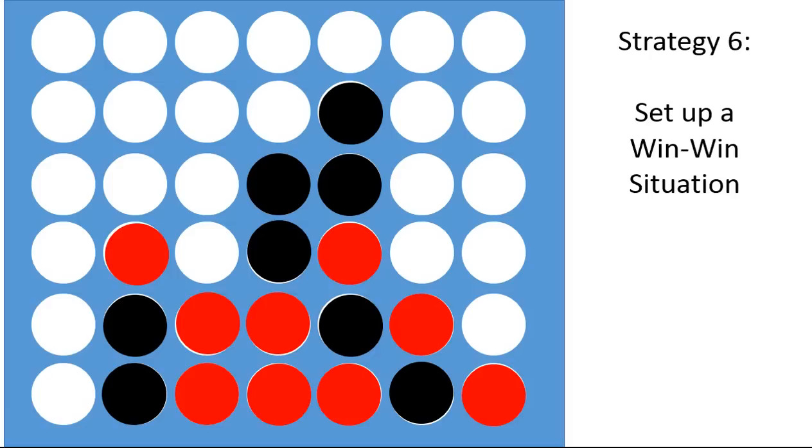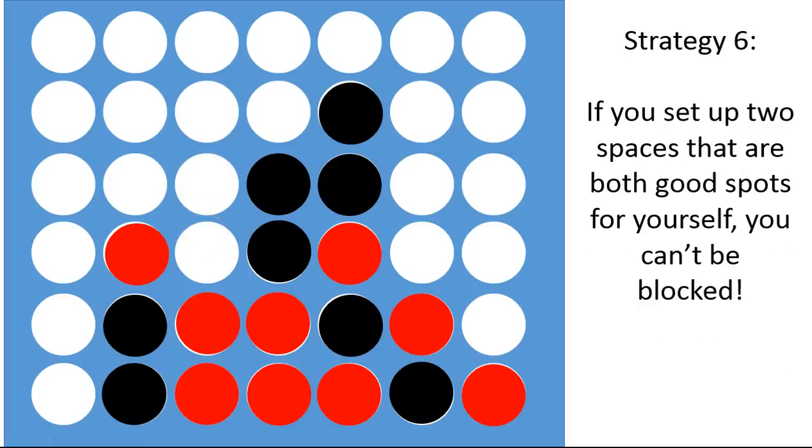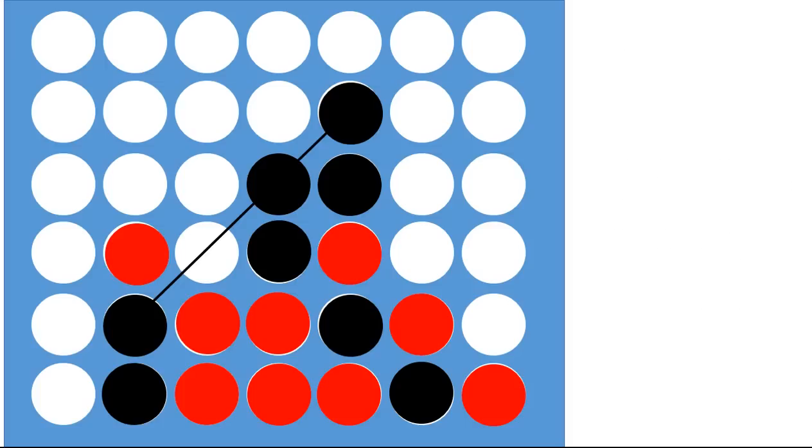And the reason why red is going to lose is because black can win here or here. You see that? Black has set up a situation that if red tries to block, he'll win. And if red doesn't block, he'll win. So if you set up two spaces that are both good spots for yourself, you can't be blocked. And that's what strategy six is all about.